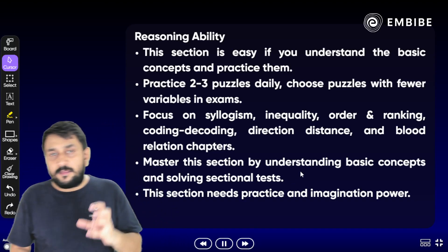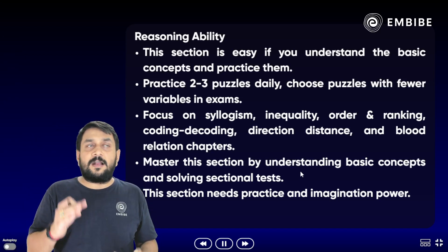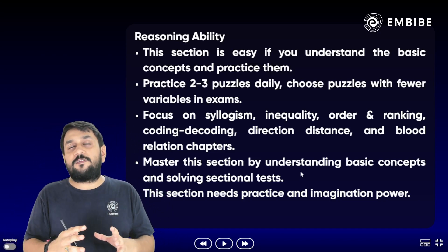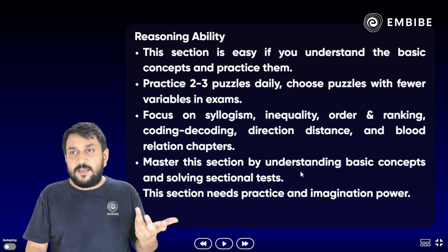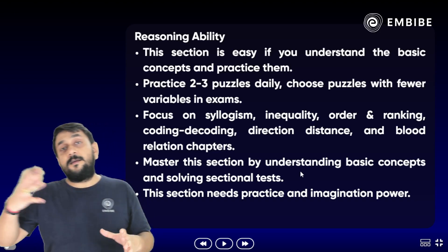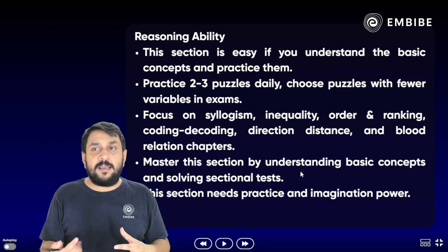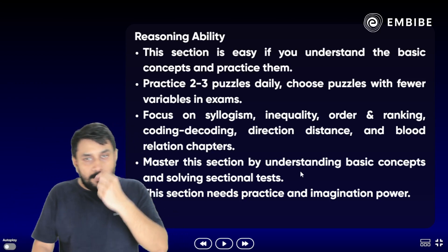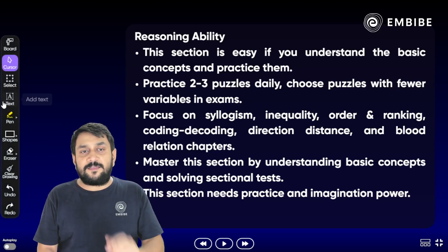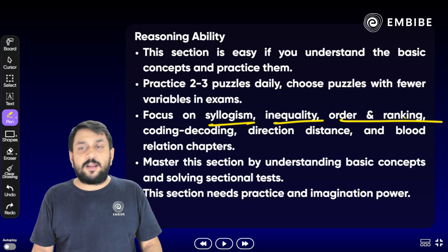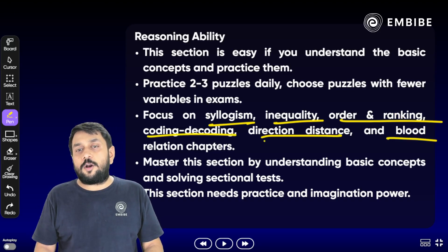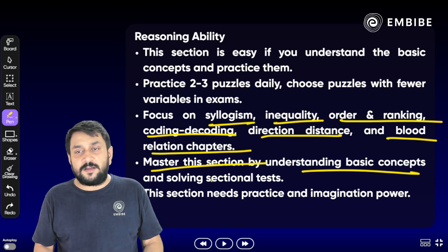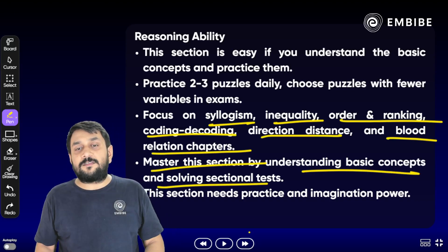Reasoning section में सबसे important part है Puzzle और Sitting Arrangement — कम से कम 2-3 puzzles और 1-2 sitting arrangements exam में आते हैं। यह section easy लगता है लेकिन basic concept और maximum practice बहुत ज़रूरी है — कई बार 2-3 cases भी बनाने पड़ते हैं। उस habit को overcome करने के लिए maximum questions की practice करो। इसके साथ Syllogisms (5 questions), Inequality (5 questions), Order and Ranking (2-3 questions), Coding-Decoding, Direction-Distance, Blood Relation — ये extra chapters भी देखने को मिलते हैं। Basic concept और maximum practice से इस section को master कर सकते हो।